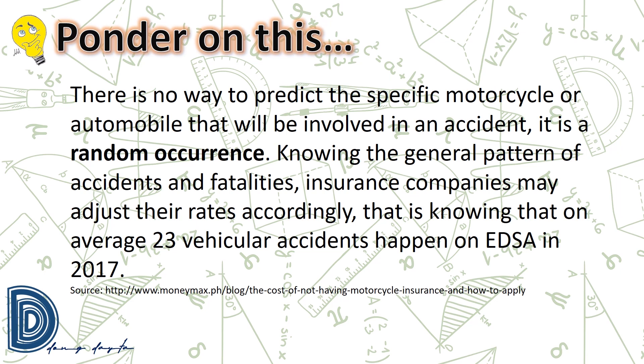There is no way to predict the specific motorcycle or automobile that will be involved in an accident. It is a random occurrence. Knowing the general pattern of accidents and fatalities, insurance companies may adjust their rates accordingly. That is, knowing that on average 23 vehicular accidents happen on EDSA in 2017.